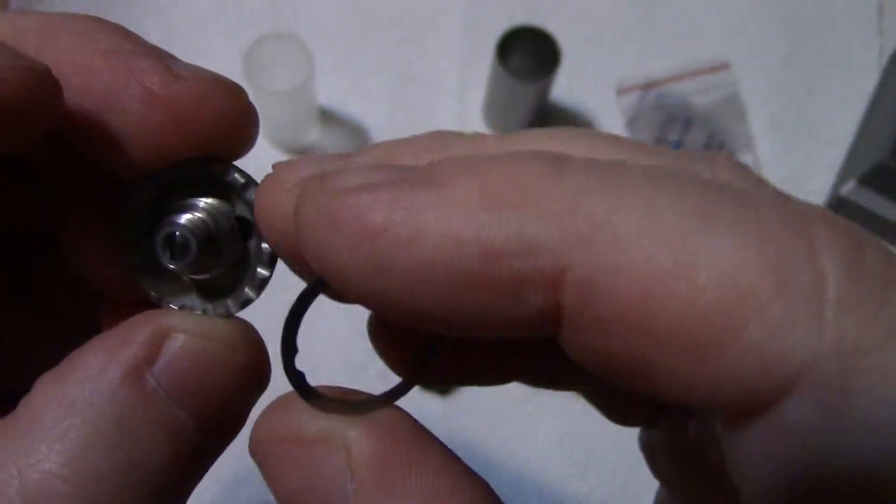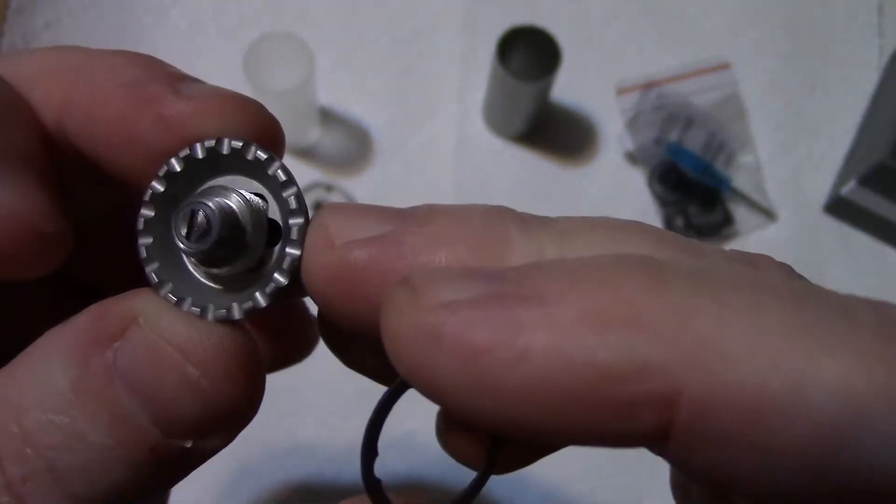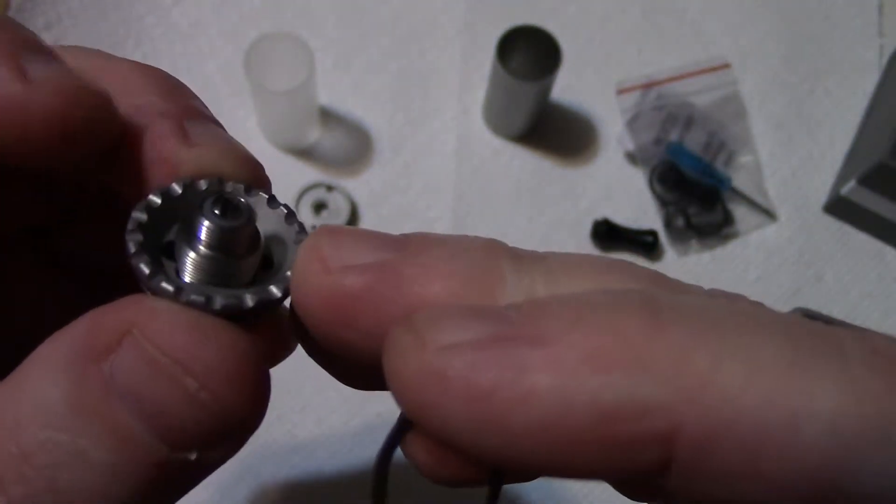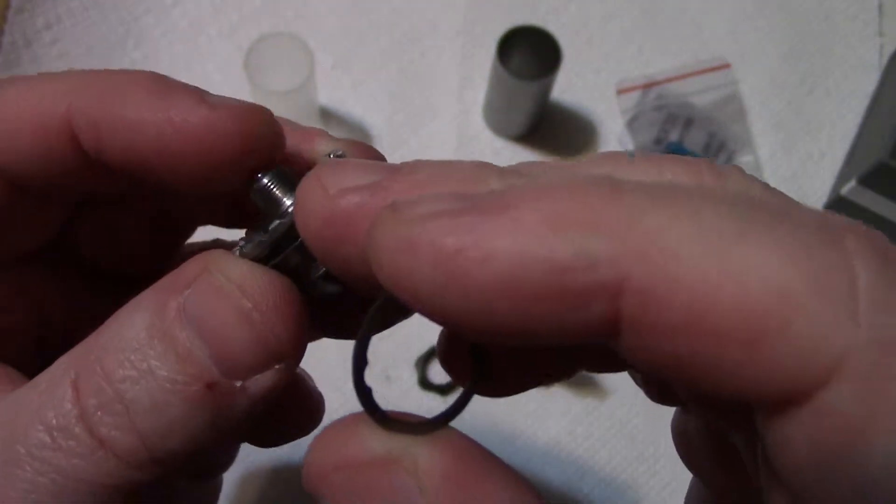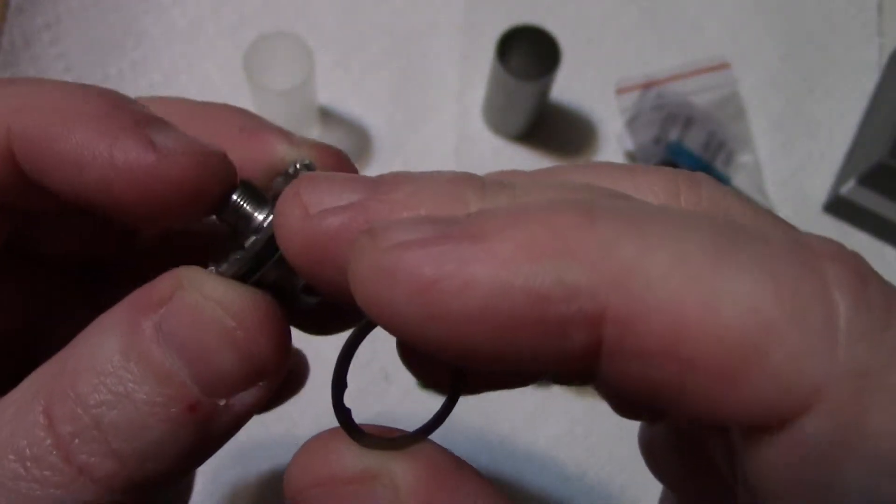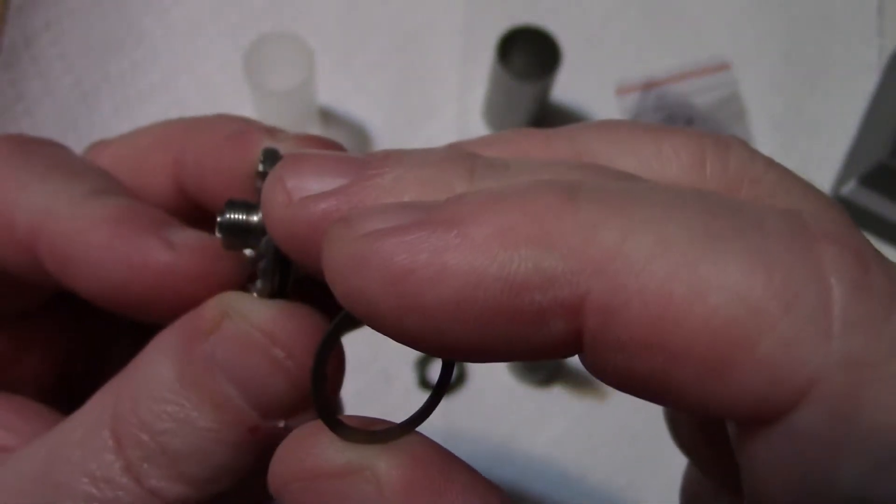It's got this ring for determining how far you should drop your wick down. The 510 post does extend out pretty far.